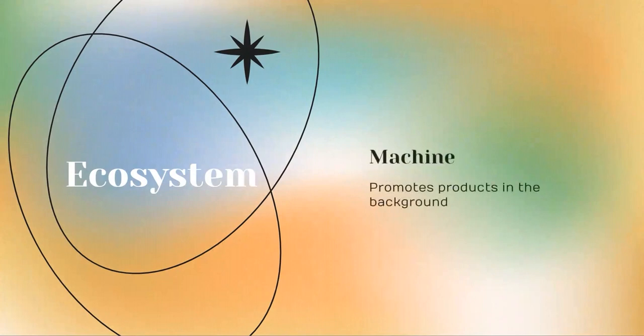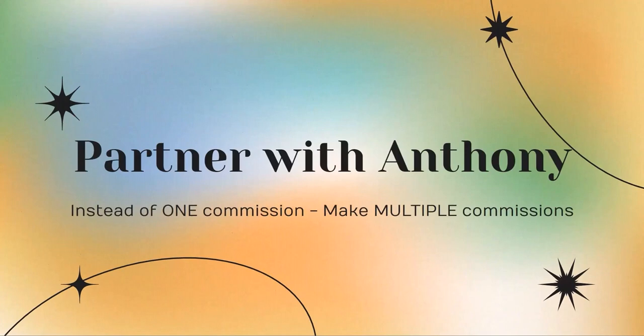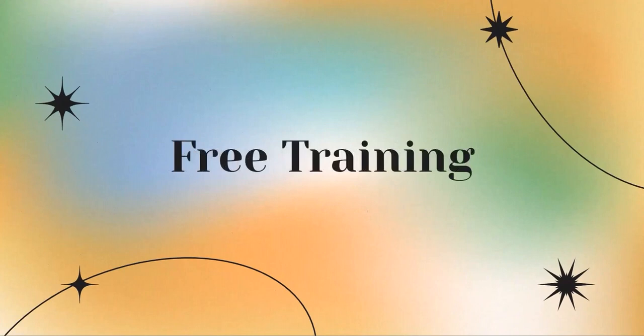This is all possible through a program called Partner with Anthony. Honestly, it's the most valuable course I've ever signed up for. The course allows you to partner with a digital marketing expert, Anthony Morrison, and tap into his ecosystem for promotion. So instead of making one commission, you're making multiple commissions. Instead of just having one thing that makes you money, you'll have a list of things that make you money all intertwined and connected. There's actually a free training that describes more about this partnership program, and I've linked it in the description. All you need to do is click that link, watch the training, and take action. I truly believe that this is the best course if you want to build a business on the Internet.